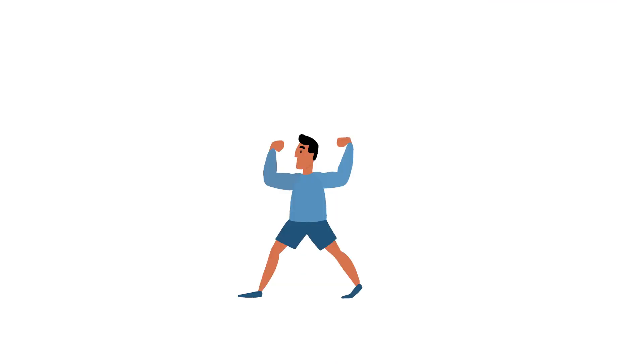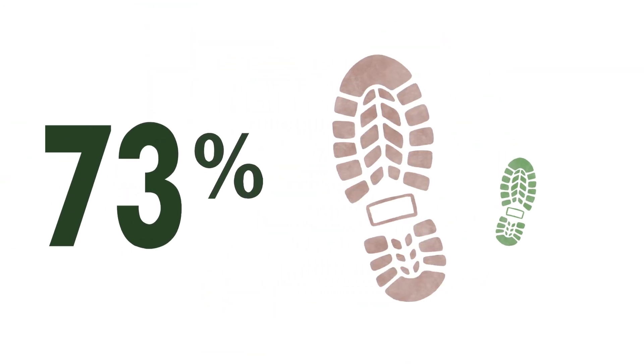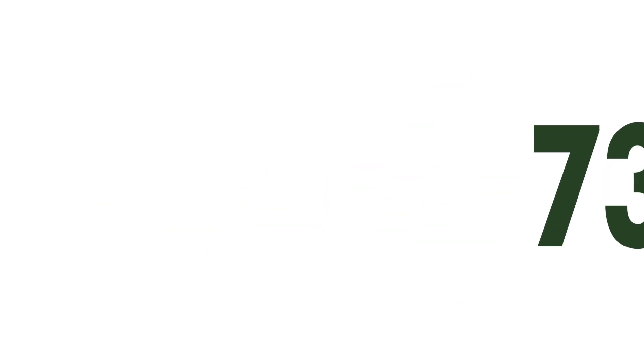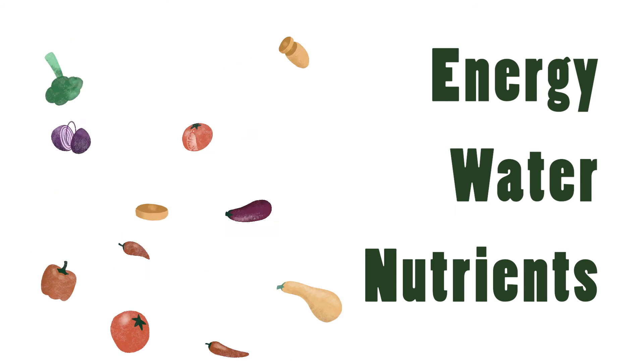Second, adjust your diet. What you eat doesn't just affect how your body functions, it affects how the planet functions. Eating a plant-based diet reduces your agricultural footprint by 73% and requires only 10% or less of the energy, water, and nutrients that are needed for the typical American diet.